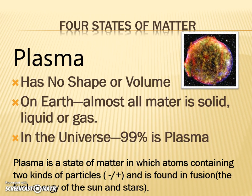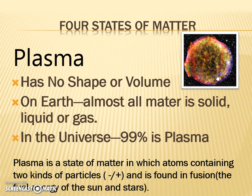The fourth state is plasma, which is different — not what you've seen before, but it has some similar properties to gas. It has no shape and no volume. On Earth, almost all the matter is solid, liquid, or gas, and very little is plasma. Plasma occurs in the stars and in our Bunsen burner — it is anything with a gas that is burning and on fire. The universe has 99% plasma. Plasma is similar to gas, but the molecules have charges — negative particles and positive particles.